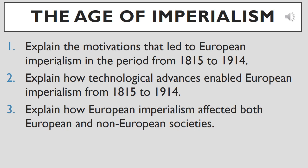At the end of this presentation, you will be expected to demonstrate your understanding of these three learning objectives. One, explain the motivations that led to European imperialism in the period from 1815 to 1914. Two, explain how technological advances enabled European imperialism from 1815 to 1914. And three, explain how European imperialism affected both European and non-European societies.